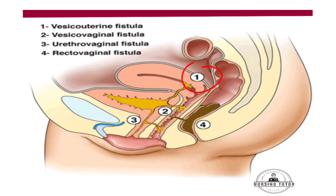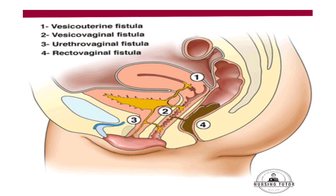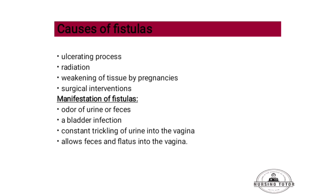Types of fistula include vesico-vaginal fistula between the bladder and vagina, urethro-vaginal fistula between the urethra and vagina, and recto-vaginal fistula between the rectum and vagina. Causes include ulceration, radiation, weakening of tissue by multiple pregnancies, or surgical interventions.